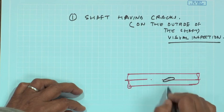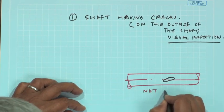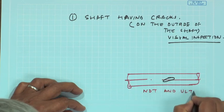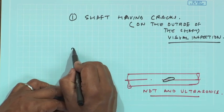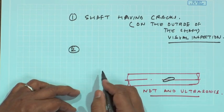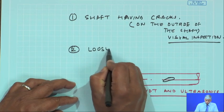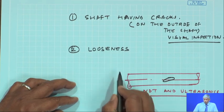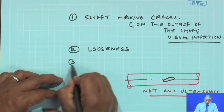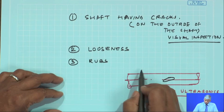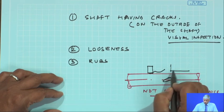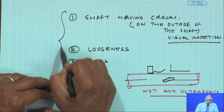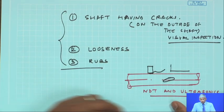Internal cracks can be detected using another technique — NDT and ultrasonics. These shafts carry many components like impellers, pulleys, and gears, and some of them can become loose. Looseness of the system will also influence the vibrations. Another kind of related defect is rubs, where some component is rubbing against a rotating shaft — they will generate a lot of vibration signature. How we can detect these is what we are going to focus on in this lecture.